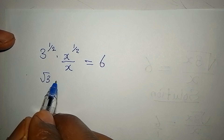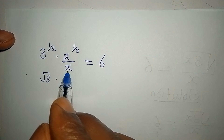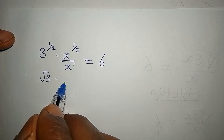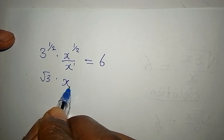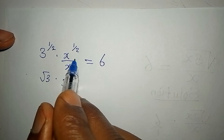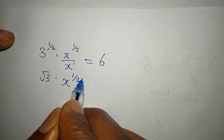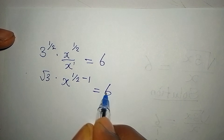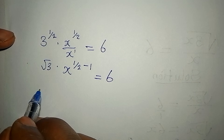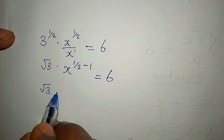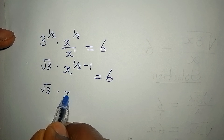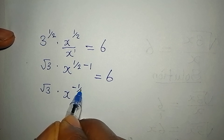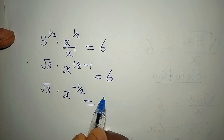We have square root of 3 multiplied by x to the power of 1/2 divided by x to the power of 1. Since we have the same base x, we subtract the powers: 1/2 minus 1 equals negative 1/2. So we get square root of 3 multiplied by x to the power of negative 1/2 equals 6.